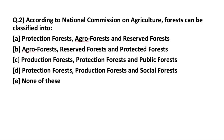According to the National Commission on Agriculture, which submitted its final recommendation in 1976, forests can be classified into three categories: protection forest, production forest, and social forest. We'll look into these three one by one.